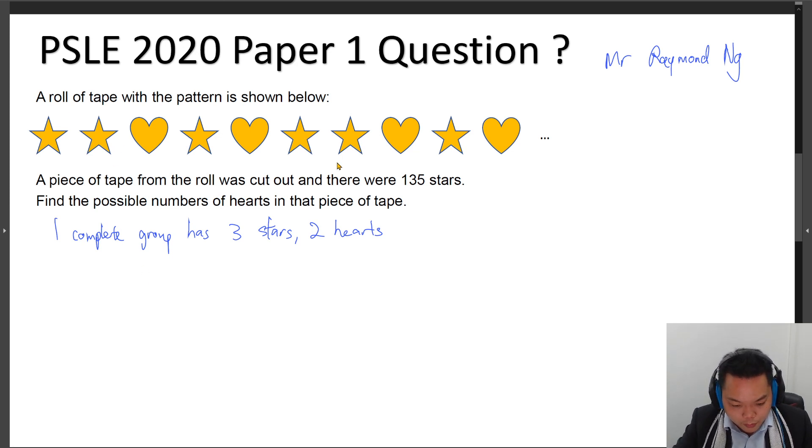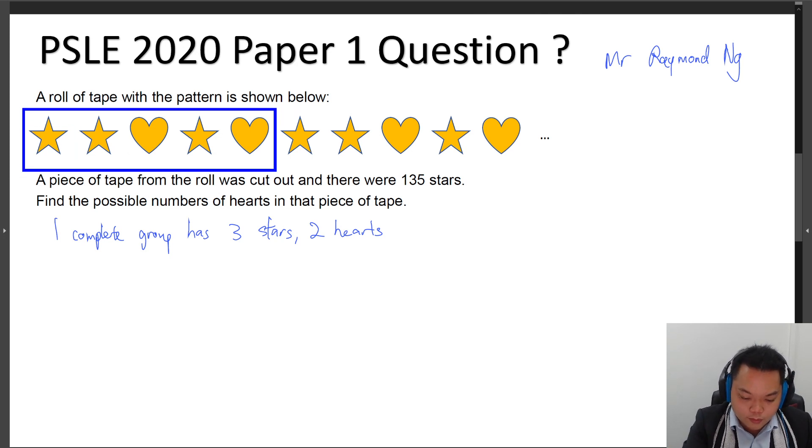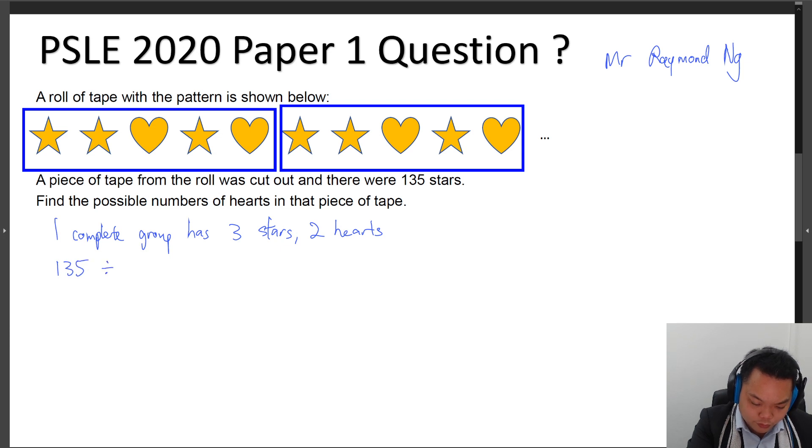So the next thing that we can do from here is you want to look at this first. And you see that if you try out 135 divided by 3, this will give you 45. So you know that by defining your set this way, you have got 45 groups, 45 such groups in total. So let's look at what happens at the 45th set. At the 45th set, this would be the 135th star over here.